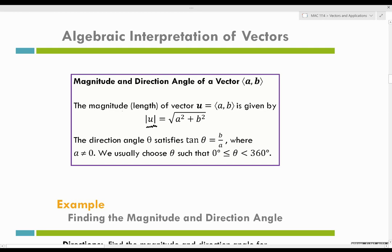If we are asked to calculate the direction angle, the direction angle theta satisfies tangent theta equals B over A, where A does not equal zero. We usually choose theta such that theta falls between 0 and 360 degrees. Let's practice.